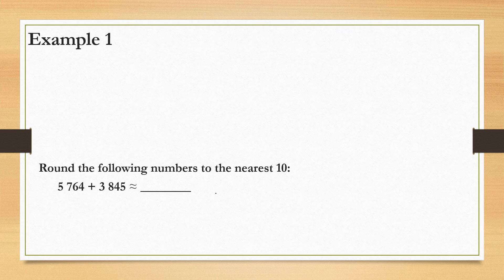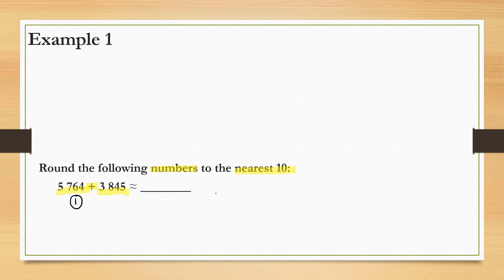We have been asked to round the following numbers to the nearest 10, and we can see that we will be making use of addition. It's 5764 plus 3845. When you're presented with this kind of example, the first step would be to write the numbers below each other, in the same way that we did in the addition and subtraction series, because we have to apply addition.